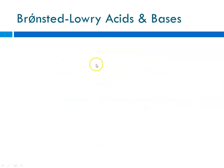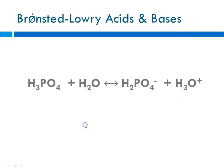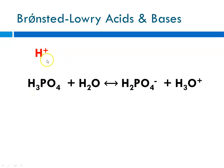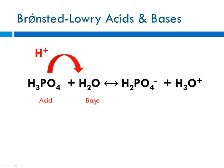Now I'm going to do another example of a Bronsted-Lowry follow-the-bouncing-proton. In this reaction, I have phosphoric acid interacting with water. We're going to follow the proton — you can tell where it's going because on this side of the equation there are three protons, and on this side there are two. The proton goes from the phosphoric acid to this water, so phosphoric acid is acting as the Bronsted acid, and water in this case is acting as the Bronsted base.